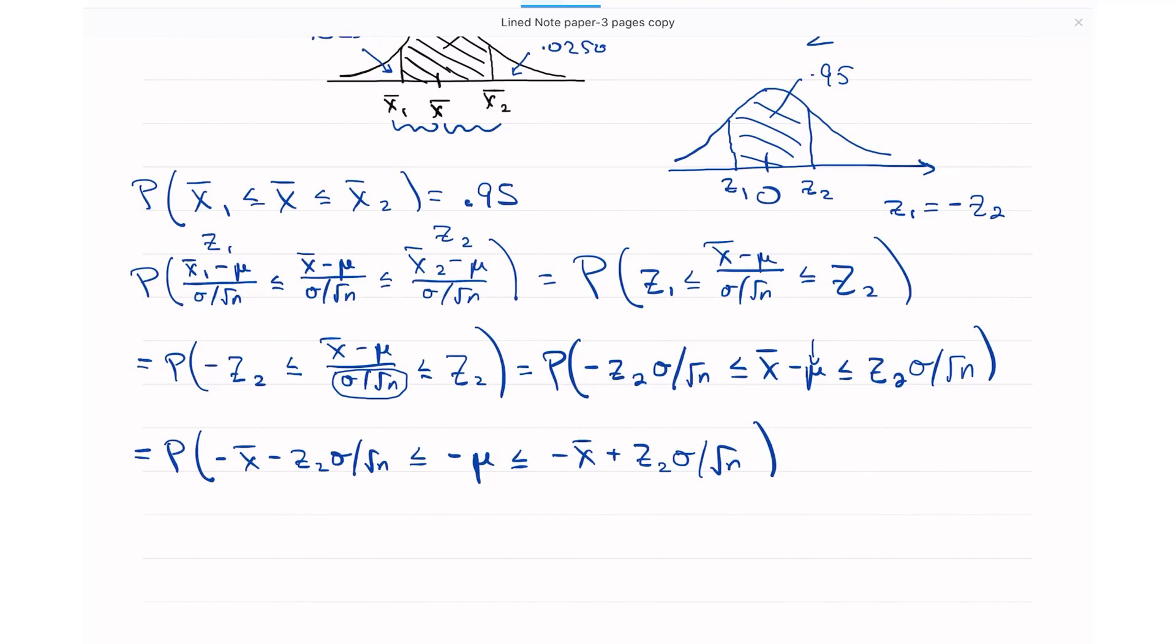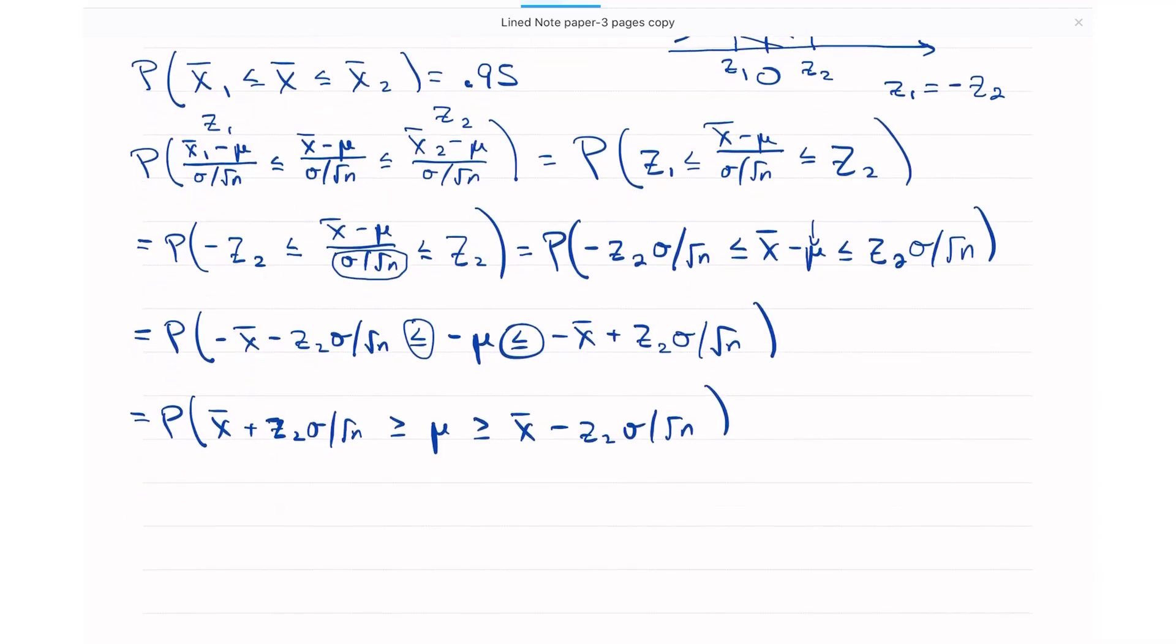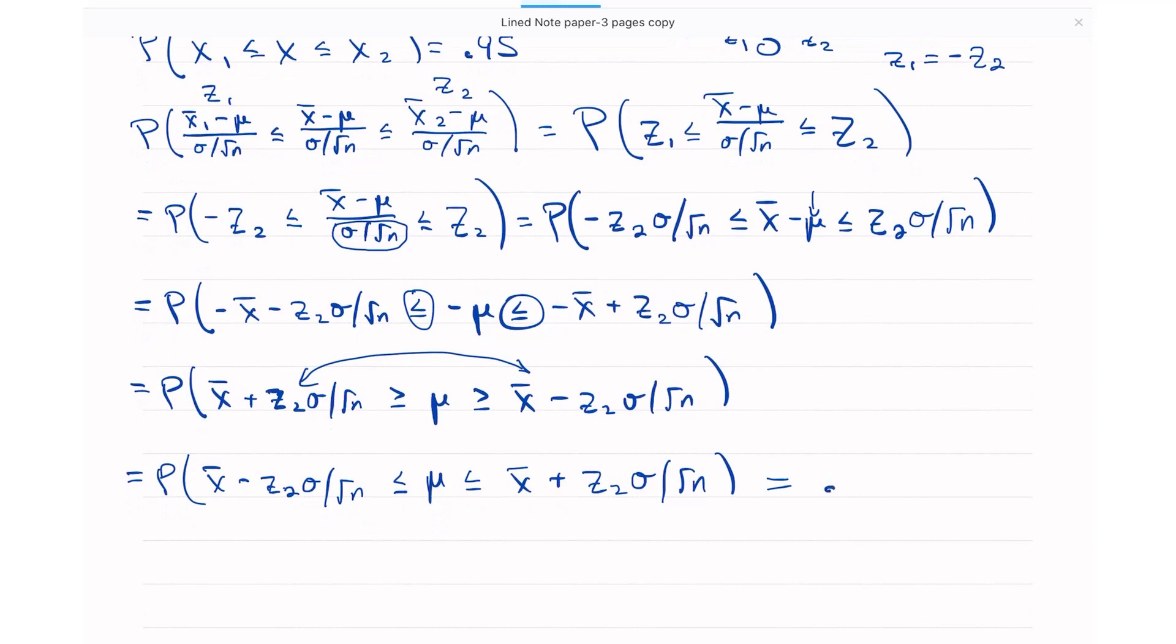I need negative x-bar minus z2 times sigma over the square root of n. I get negative mu and I get negative x-bar plus z2 sigma square root of n. I don't want negative mu, I want positive mu. So I'm going to multiply all three sides by negative 1. That means I change all the signs, but I also have to flip these. I end up with x-bar minus z2 sigma over the square root of n, mu in the middle, and then x-bar plus z2 sigma square root of n. This equals my confidence level.